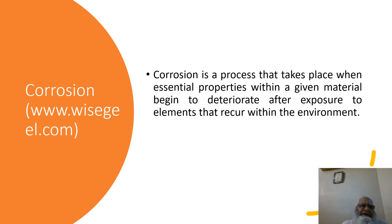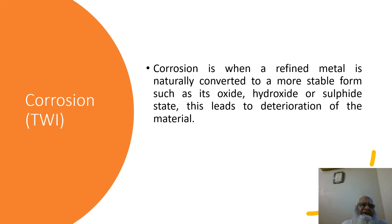This definition is taken from WiseGeek.com, that states corrosion is a process that takes place when essential properties within a given material begin to deteriorate after exposure to elements that occur within the environment. This definition is taken from TWI, that states corrosion is when the refined metal is naturally converted to a more stable form such as its oxide, hydroxide or sulphide state, which leads to deterioration of the material.